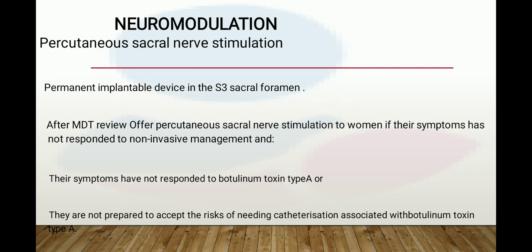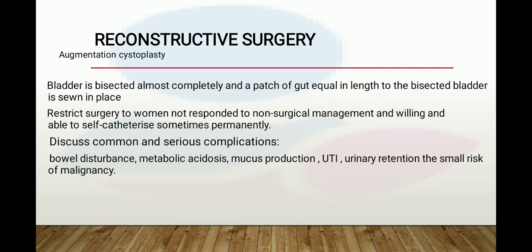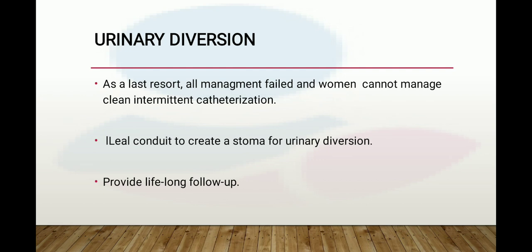Reconstructive surgery — augmentation cystoplasty — involves bisecting the bladder almost completely and suturing in a patch of gut equal to the length of the bisected bladder. Restrict this surgery to women who have not responded to non-surgical management and who are willing and able to self-catheterize, sometimes permanently. Discuss complications including bowel disturbance, metabolic acidosis, mucus production, urinary retention, and small risk of malignancy. As a last resort, urinary diversion — an ileal conduit creating a stoma — is used when the woman cannot manage clean intermittent catheterization, requiring lifelong follow-up.